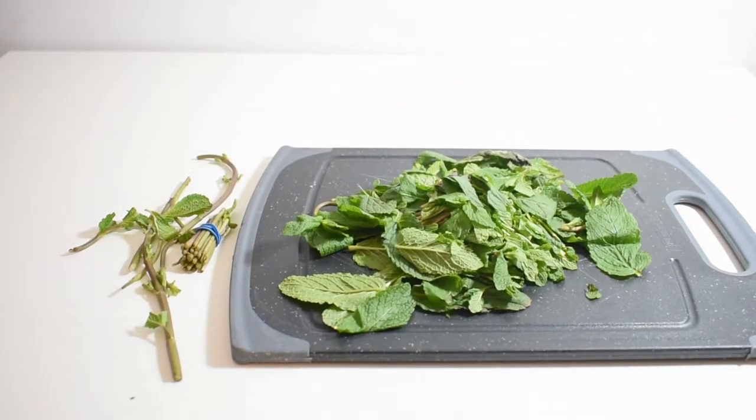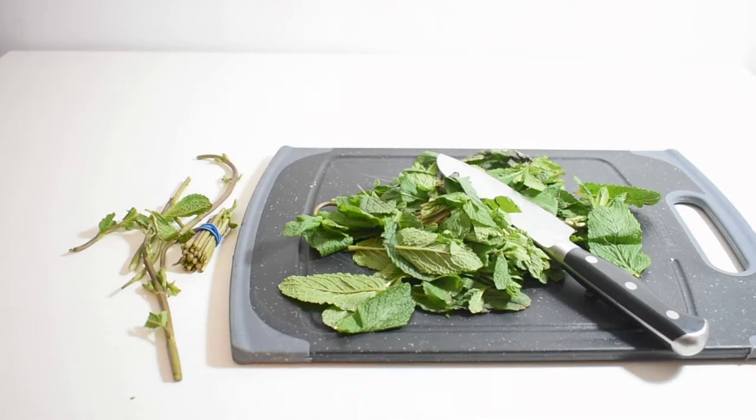Now that I have two packets of mint with the leaves separated from the stems, I'm going to chop up the leaves with a knife into smaller pieces. I don't want the pieces to be too small because that can cause a lot of foaming and problems in the next step.